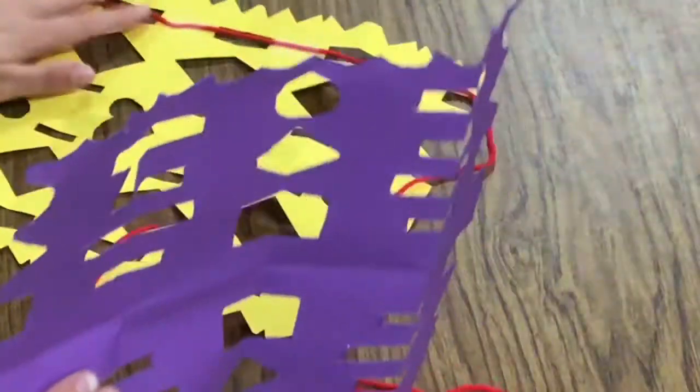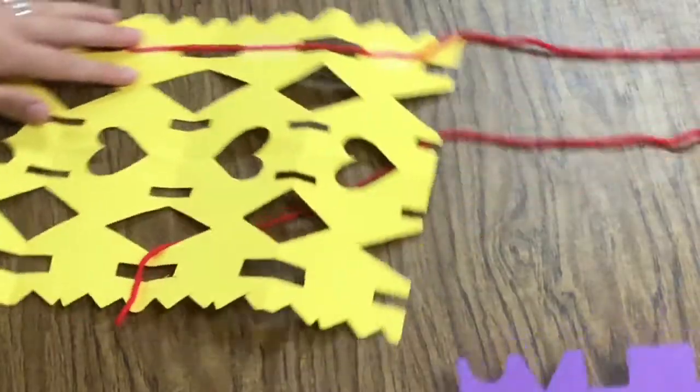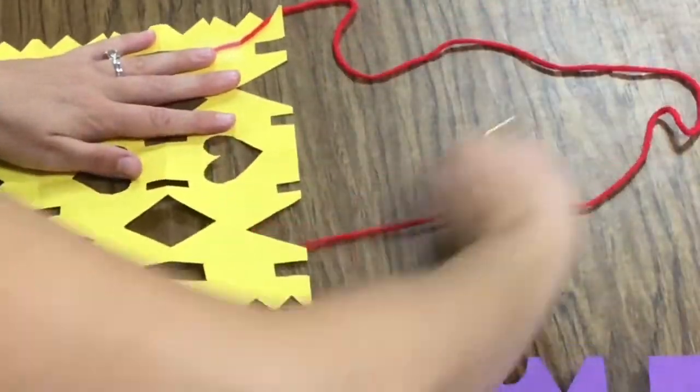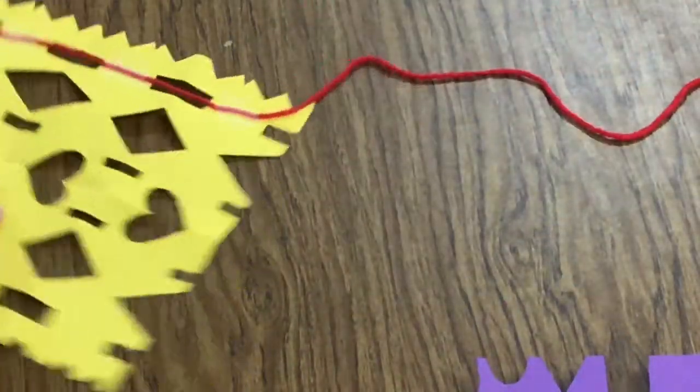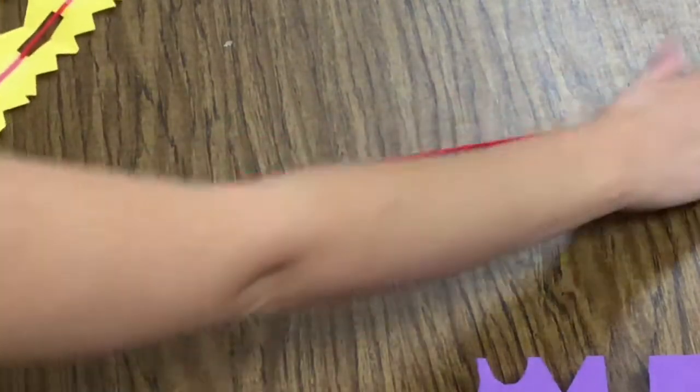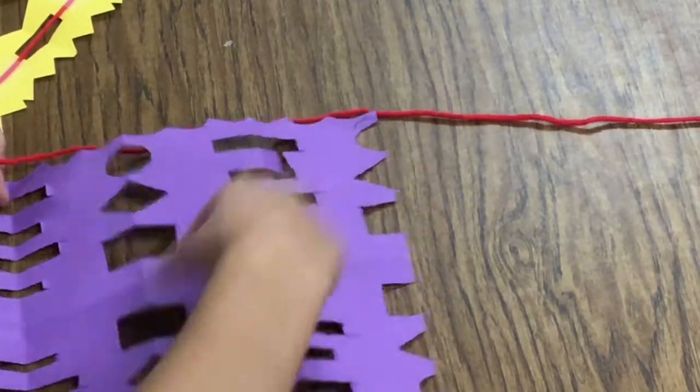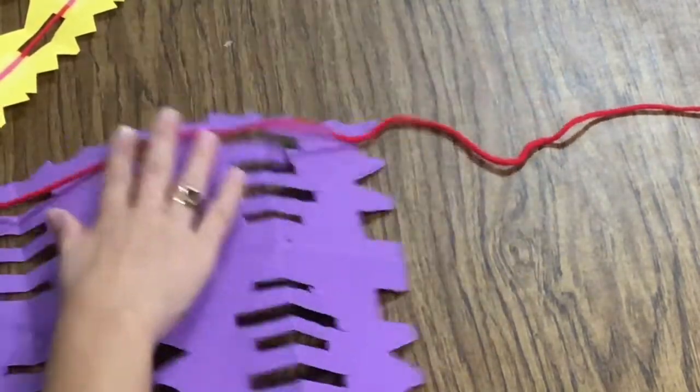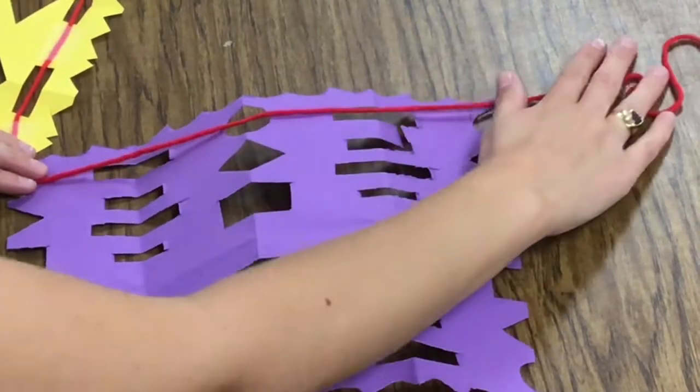So once you have a flag that's ready to add to your design, you are going to lay out your string nice and flat on your table. And I've kind of got some more flags, so I have to kind of swing them around. Your flag is going to go underneath your yarn. The yarn is going to be on top.